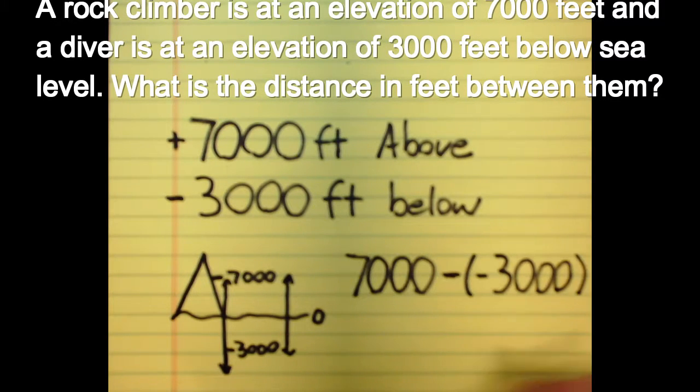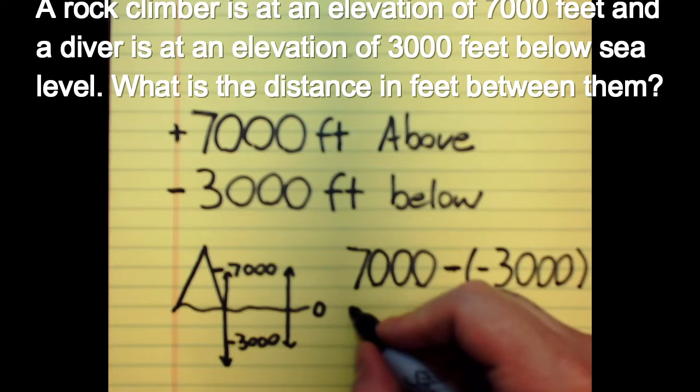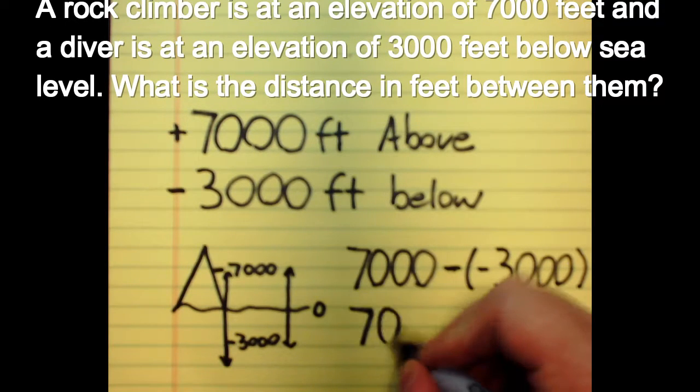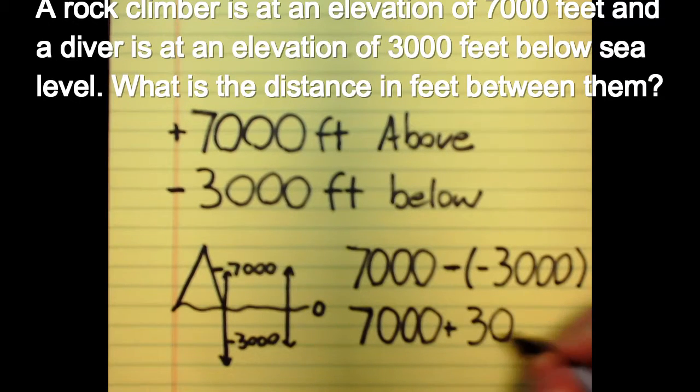Okay, now we know if we have a negative next to a negative, this negative is going to reverse this negative sign. So we're basically going to turn it around because it's a different direction. So this becomes 7,000 plus 3,000, and that will give us a total of 10,000 feet in difference.